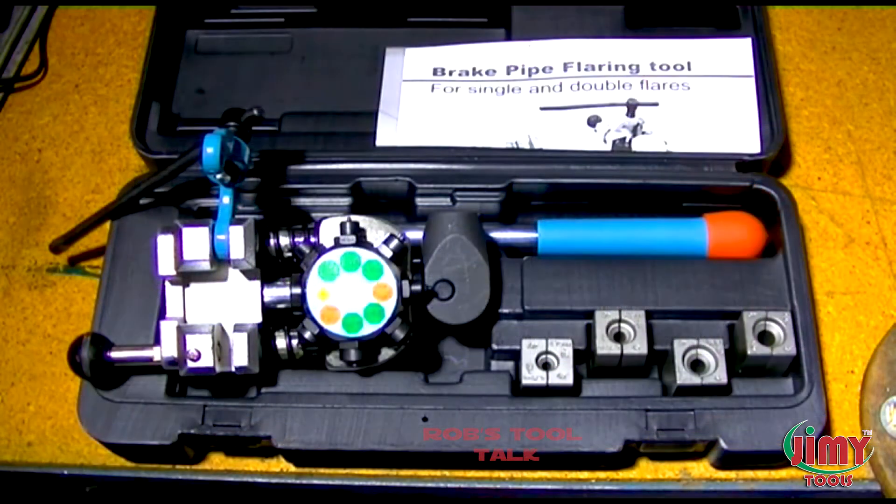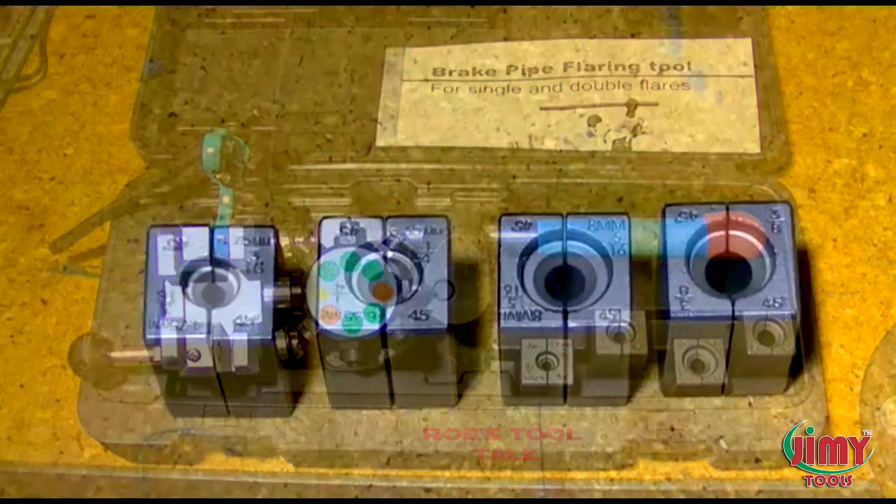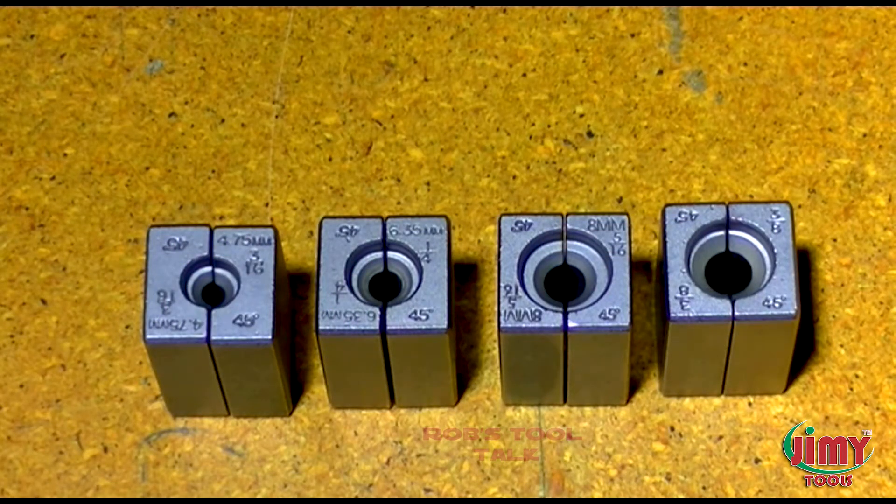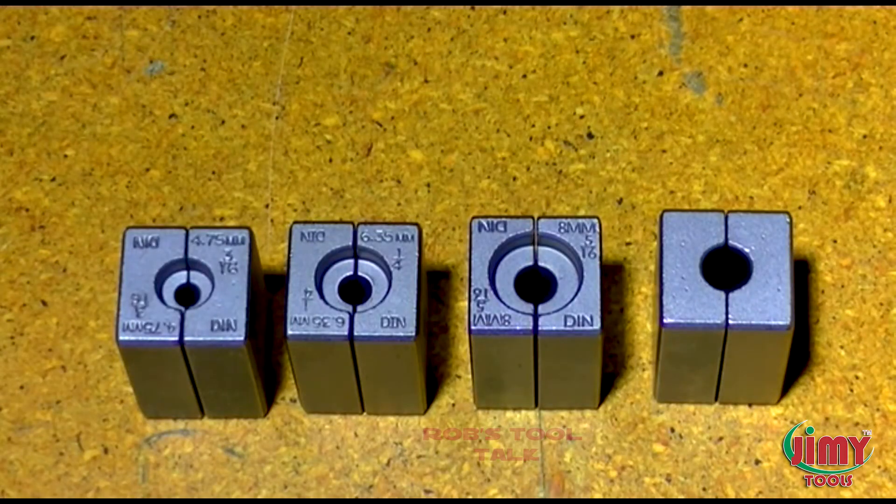Included in the kit are four 45-degree forming dies: 3/16, 1/4, 5/16, and 3/8. On the other end of the dies are three DIN sizes: 4.75 millimeters, 6.35 millimeters, and 8 millimeters.